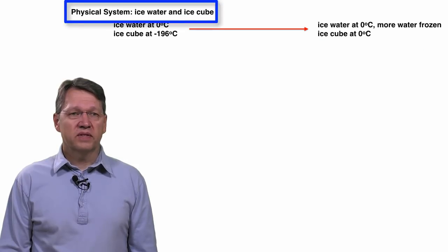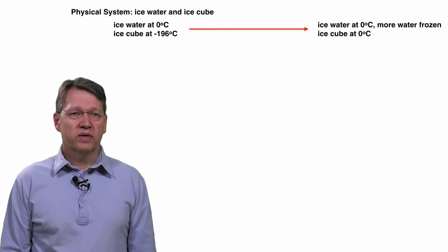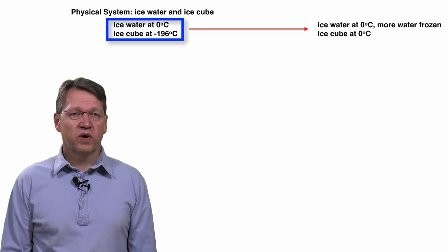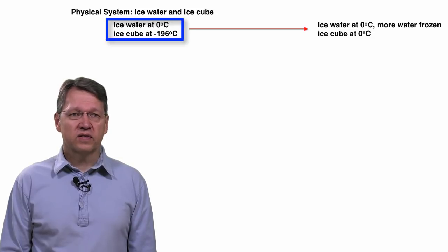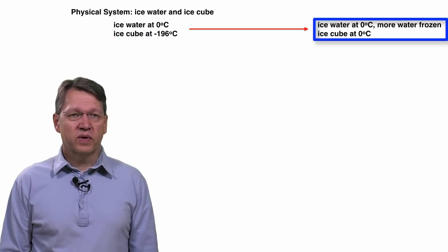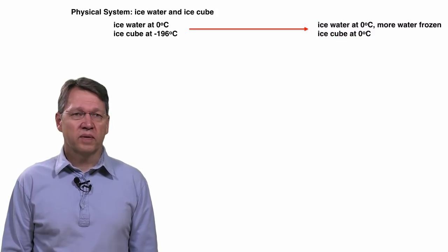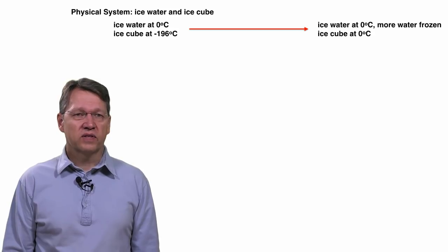The physical system is the ice water and the ice cube. The system begins with the ice water at zero degrees Celsius and the ice cube at minus 196 degrees Celsius. The system ends when everything is at zero degrees Celsius and more of the water is frozen. We can neglect the amount of heat carried away by the surrounding air, so it's a closed system.